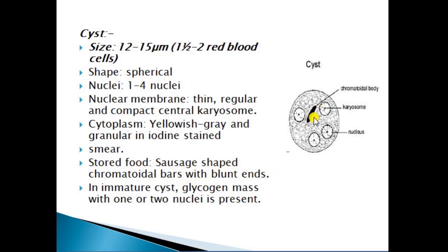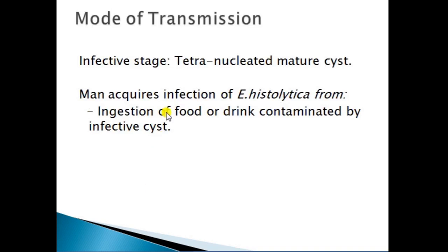This is the stored food material. In the mature cyst, a glycogen mass with one or two nuclei is present. This slide shows the mode of transmission. The infective stage of Entamoeba histolytica is the quadrinucleate mature cyst. Humans acquire this infection mainly through ingestion of food or drinks contaminated with infective cysts, or if the hands of the person are contaminated.